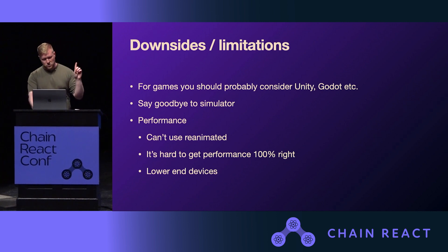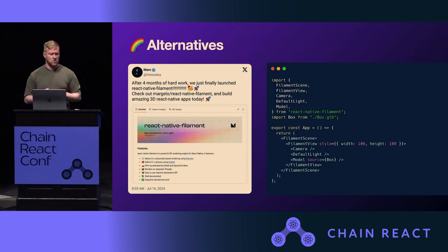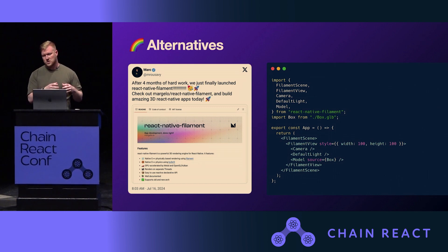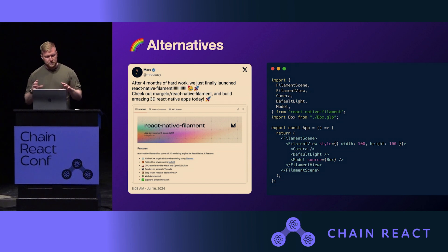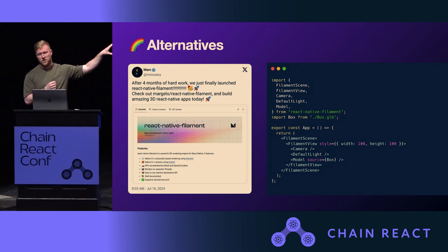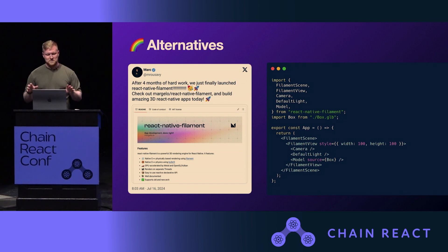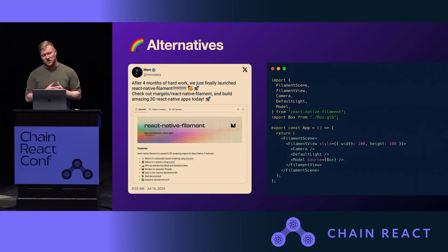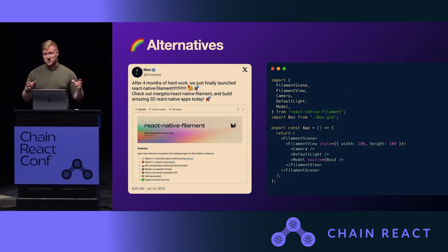But there is one option. Just two days ago, a new package came out called React Native Filament, which basically encapsulates the Filament rendering engine developed by Google — which is probably actually a good thing, although it's Google. It has a syntax very similar to React Three Fiber. I tested it out really quickly and I do kind of like it. I wasn't able to get anything massively complex done, mainly because I looked at it this morning. But that's one option, and I'm really interested to see how it gets adopted more and what you can actually build with it.